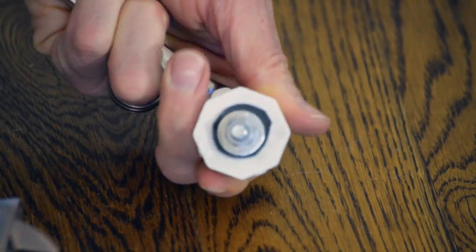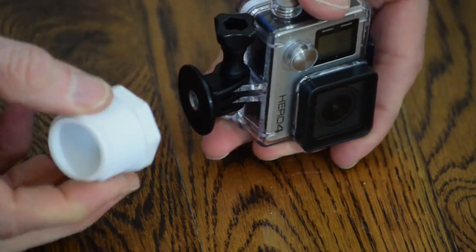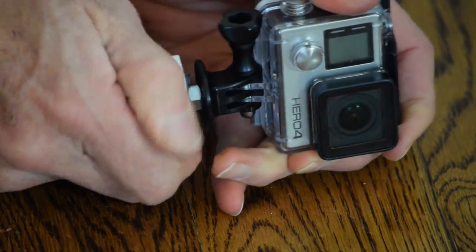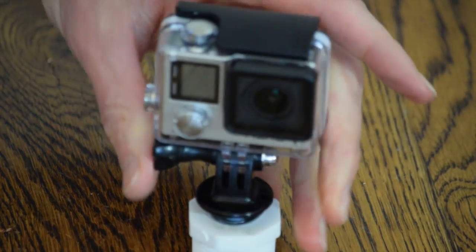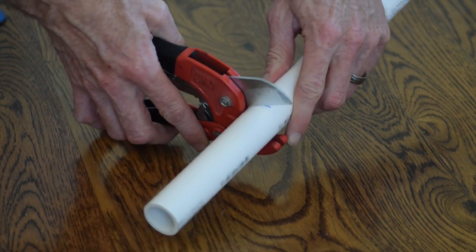At this point I test fitted the GoPro camera mount to the bolt to make sure that the bolt would fully seat into the GoPro tripod mount. Next I cut a 1 inch PVC pipe to 6 inches long.